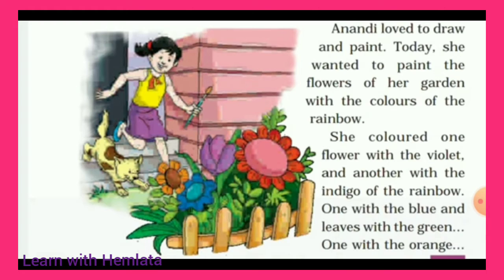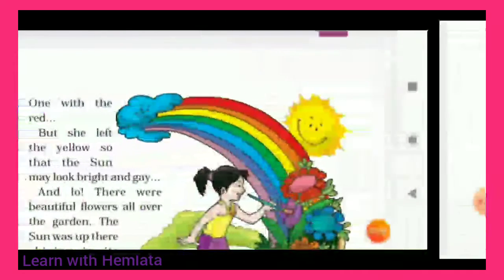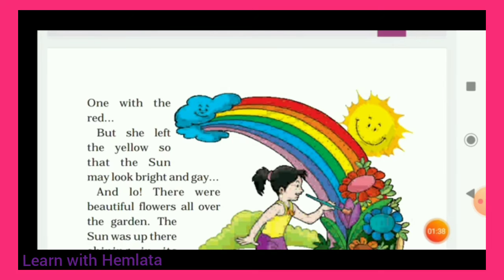She colored one flower with violet — violet means purple. And another with the indigo of the rainbow. Indigo color means bluish color. One for blue — pure blue color. And leaves with the green. One flower with orange and another flower with red. Now six colors of the rainbow were completed by her.